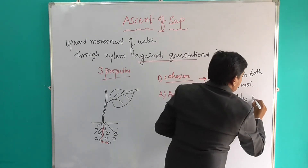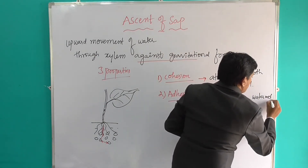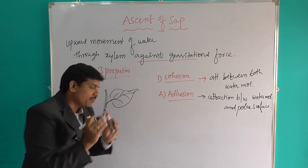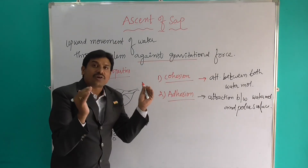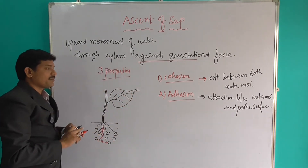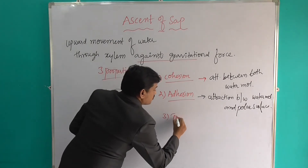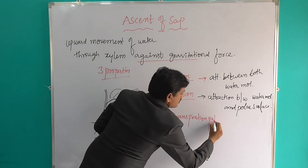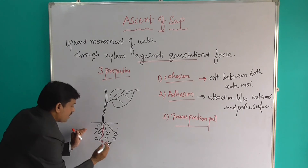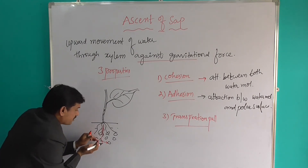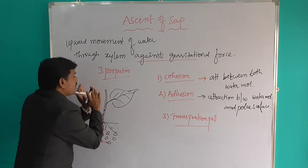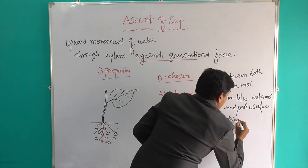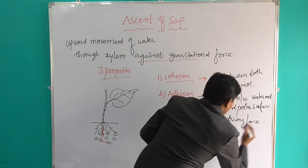So adhesion is the attraction between water molecules and the polar surface. The third property is transpiration pull. Transpiration pull means: first there is attraction between water molecules, and attraction between water molecules and polar surface, and now the driving force — the upward movement of water — that is transpiration pull, the driving force for upward movement of water.